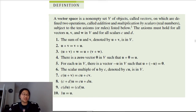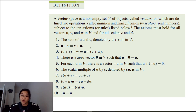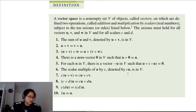We have addition and multiplication that work as expected. The sum of two vectors u and v is still contained in our vector space V. We also have the commutative property of addition, the associative property of addition, and our zero vector — where u plus the zero vector returns u. We also have the additive inverse, where u plus negative u gives us our zero vector.